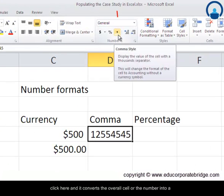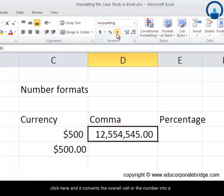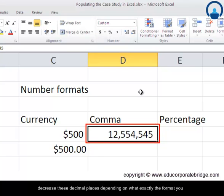However, when you look at a comma format—comma format essentially means just click here—and it converts the overall cell or the number into a similar currency format but without the dollar sign. So what we can see here is that there are commas in between, that's why it is called comma style, with two decimal places.